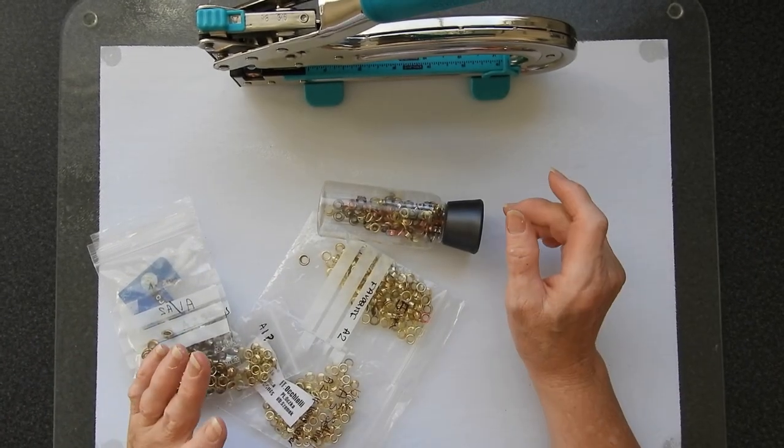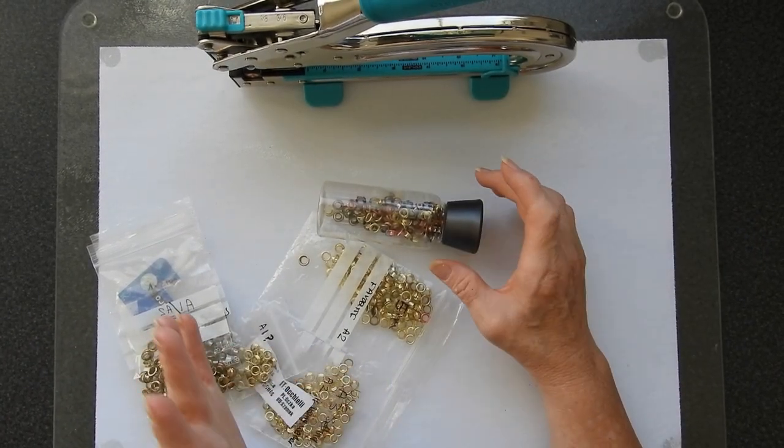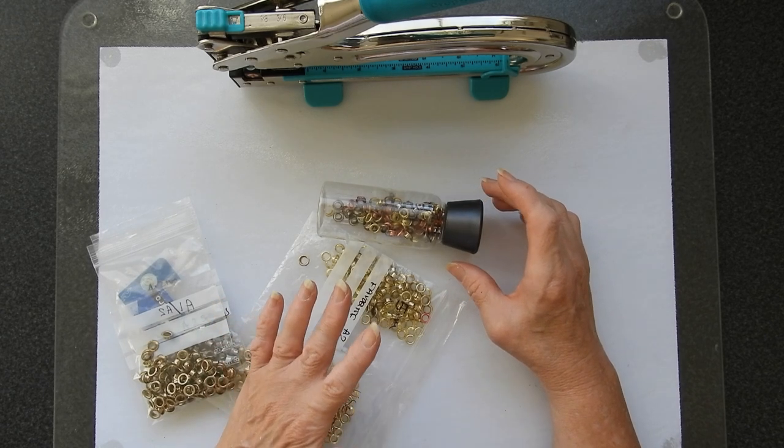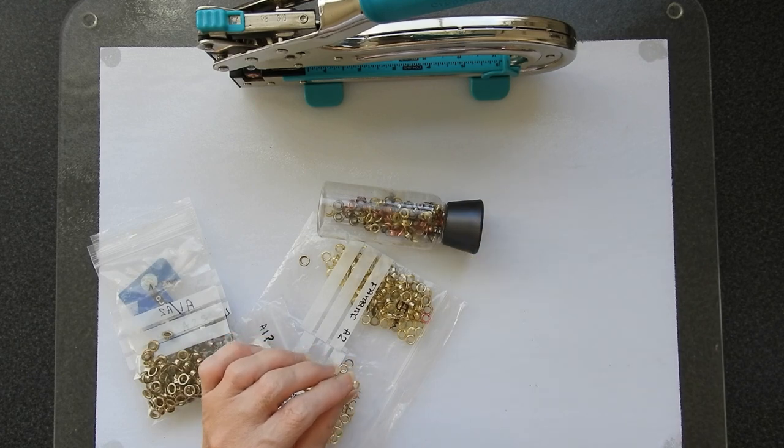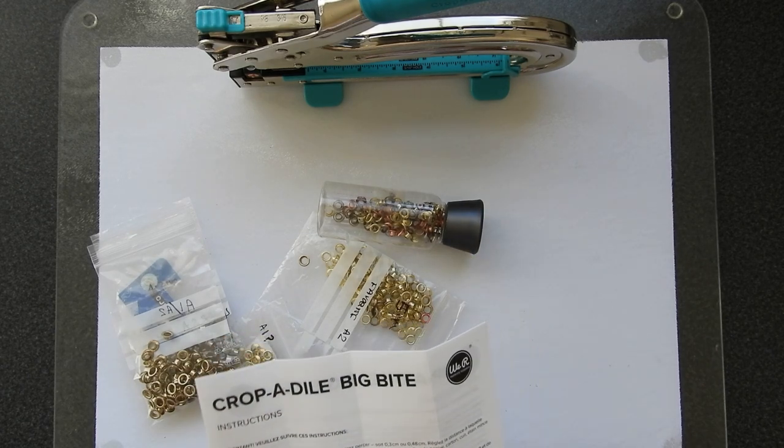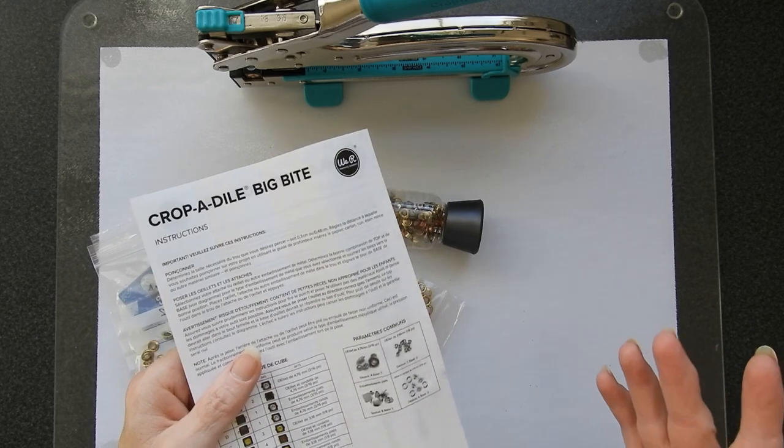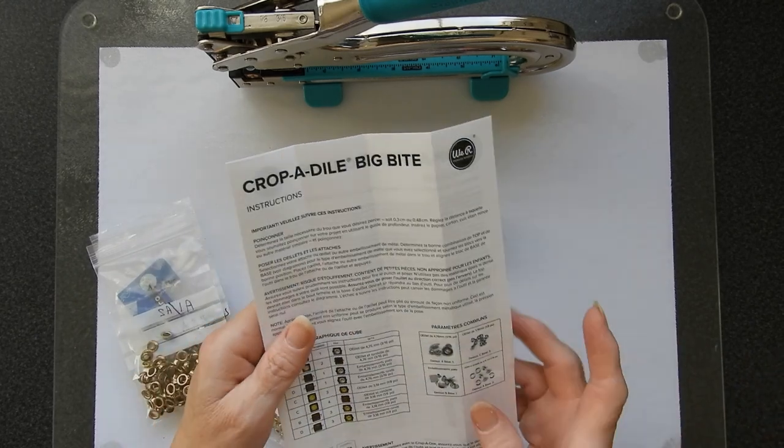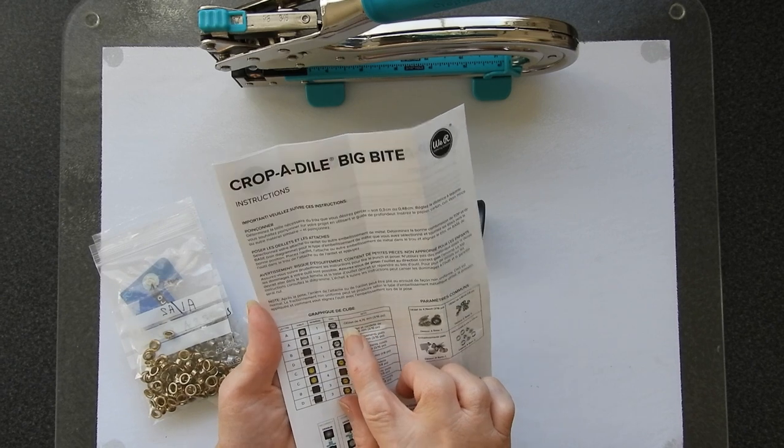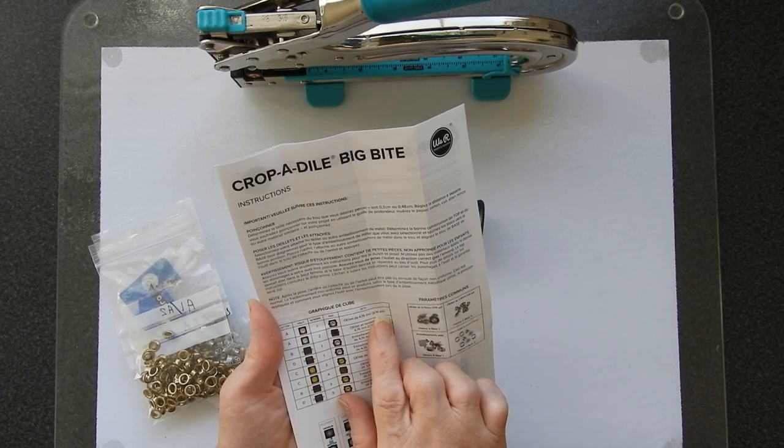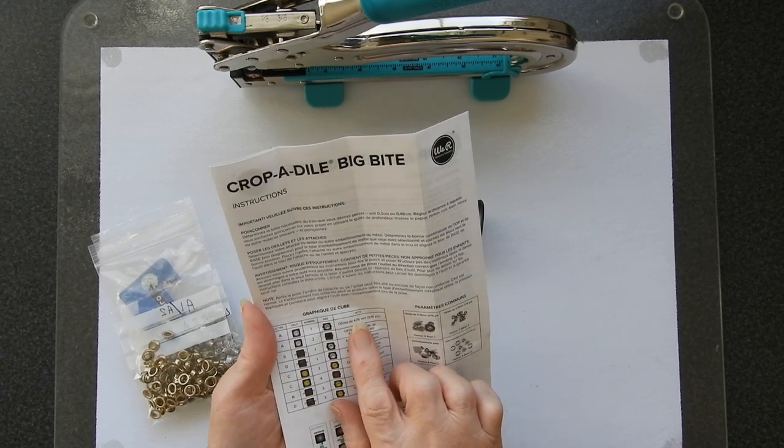All it is is that you need to play with the settings. Now this I believe is simply because I'm in Europe. When I looked at the instructions again, I picked it up facing the wrong page. I noticed that on this one, the eyelets are in millimeters, which they're not in the English version, but they are here.